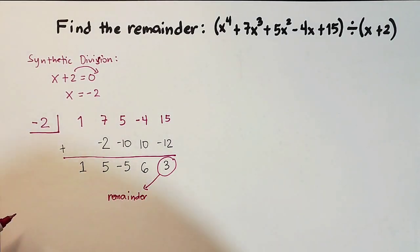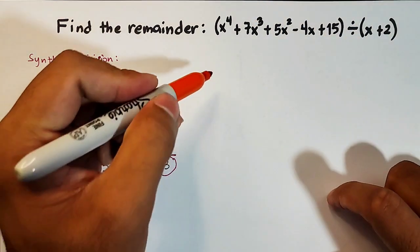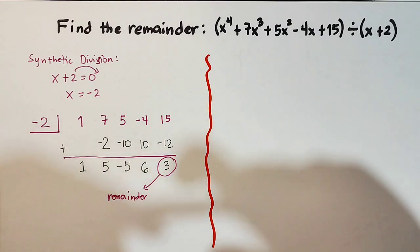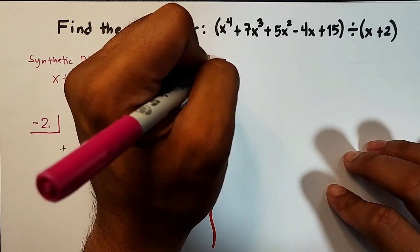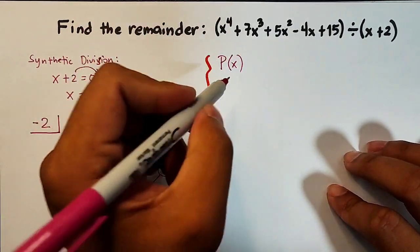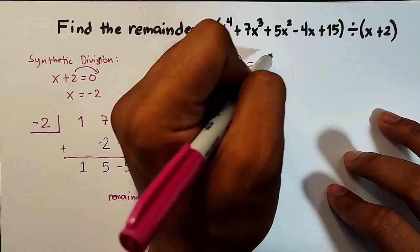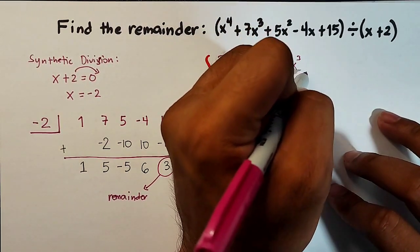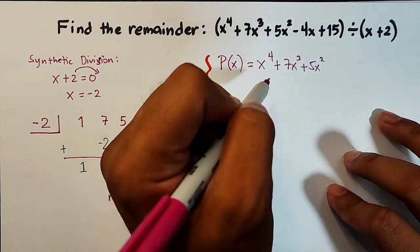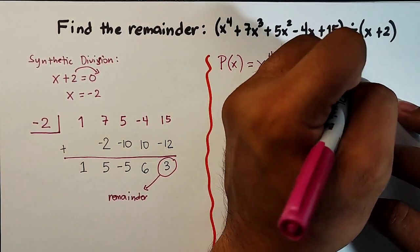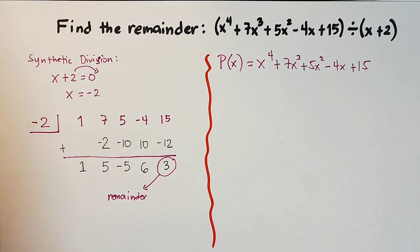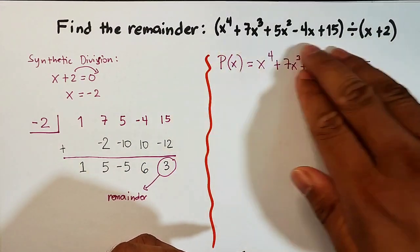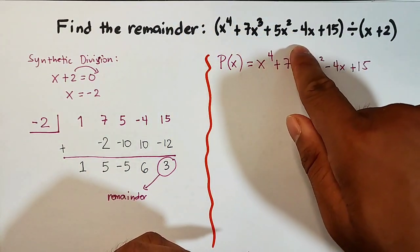Now, how do we use the remainder theorem to easily find the remainder? What we do is write the dividend in function notation: p of x equals x to the 4th power plus 7x cubed plus 5x squared minus 4x plus 15. Then from the divisor x plus 2 equals 0, we get x equals negative 2. This negative 2 will be the input — we plug it into the function.